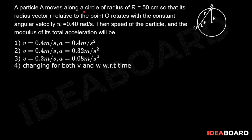A particle A moves along a circle of radius r = 50 cm so that its radius vector r relative to the point O rotates with constant angular velocity omega = 0.40 rad/s.